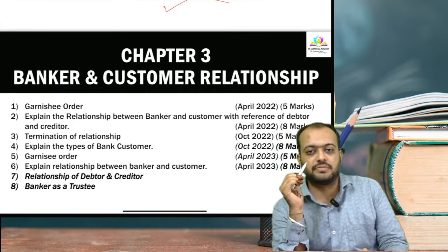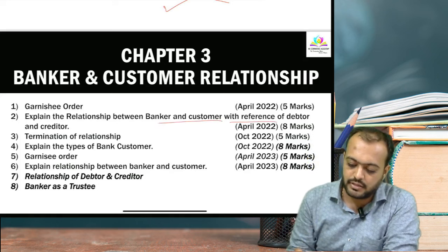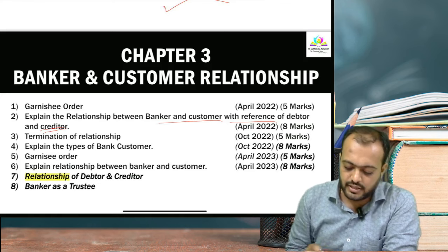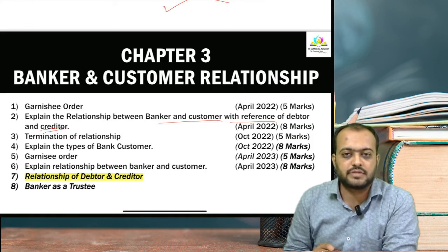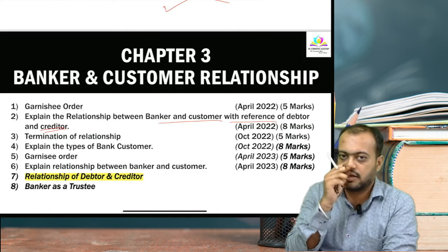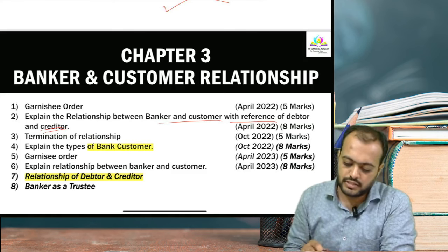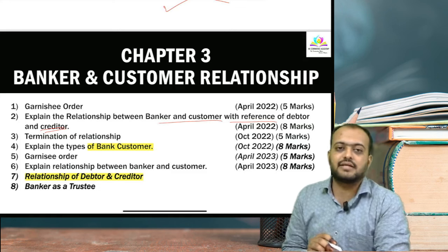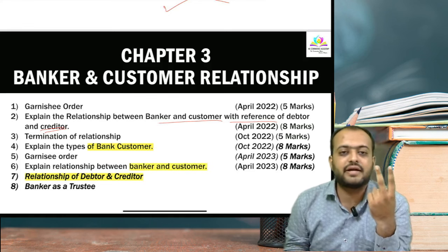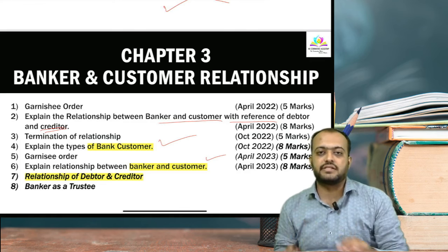Chapter 3 — Banker and Customer Relationship. Garnish order has been asked. After that, relationship between banker and customer with reference to debtor and creditor — this question personally seems important to me this time, has chances of coming. You may be asked as short notes for 5 marks, or for 8 marks with detailed answer. Garnish order has been asked twice. Explain the types of bank customer — this is also a good question for 8 marks or 7 marks. Types of bank customer and relationship between banker and customer — these two topics you must prepare.